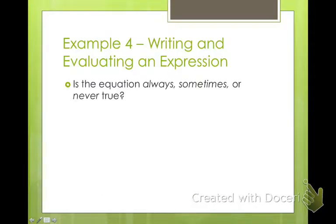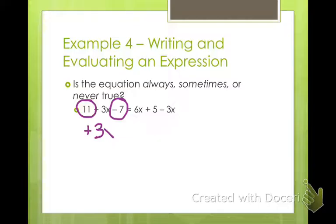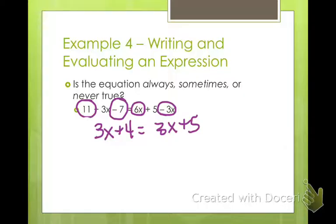All right. So these equations we're going to evaluate and see if they're always, sometimes, or never true. So for the first one, 11 plus 3X minus 7 equals 6X plus 5 minus 3X. What we want to do is we want to combine all our like terms on each side and see what happens. So I'm going to go ahead and I kind of like that purple color. So on this side, I can combine 11 and negative 7. What is 11 minus 7? 4. So I have positive 3X plus 4. Over here, I can combine 6X and negative 3X. I get 3X plus 5. If I ever have a value and I add 4 to it, or if I add 5 to it, is it ever going to be true? No, never? Are you sure? Me too. So this would be never true.